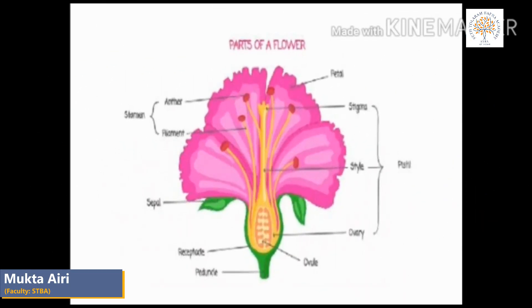Flower. The flower is the most attractive part of a plant. We see different types of flowers around us. Flowers come in many shapes, sizes, and colors. Some flowers have a sweet smell. Flowers grow from the bud on the stem. A flower has four main parts: sepal, petal, stamen, and pistil. The flower is attached to the tip of the stem. Let us now know more about the parts of a flower.